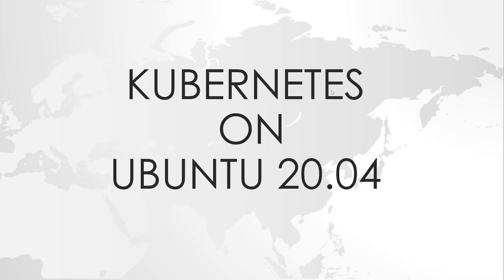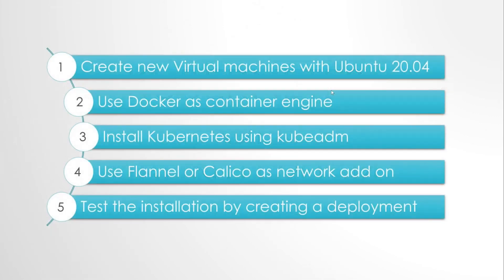In this video I will show you how to install Kubernetes on Ubuntu 20.04. The steps I will be covering are: creating virtual machines using Ubuntu 20.04, using Docker as the container engine, installing Kubernetes using the kubeadm tool, configuring the CNI using either Flannel or Calico, and finally creating a deployment to test the complete installation process.